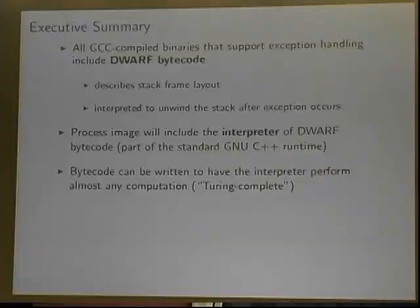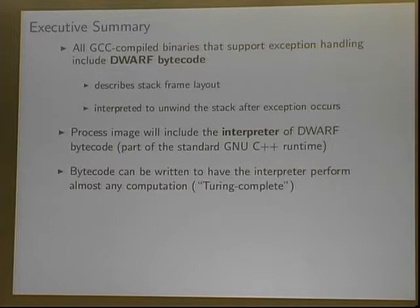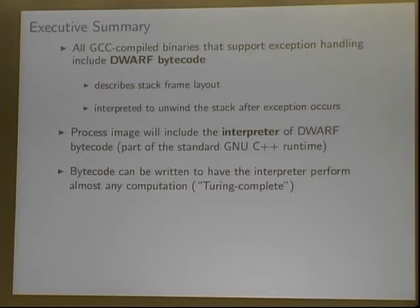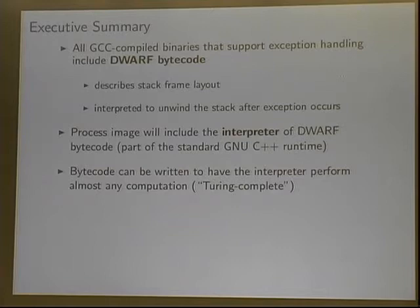This is about a really interesting discovery that we made, unexpected for us. The discovery was that all GCC-compiled binaries — whether in C or C++ — if the program includes something that throws an exception, it includes DWARF bytecode. This DWARF bytecode describes the stack frame layout for when you unwind the stack when an exception happens, and it comes packaged with every GCC-compiled executable.